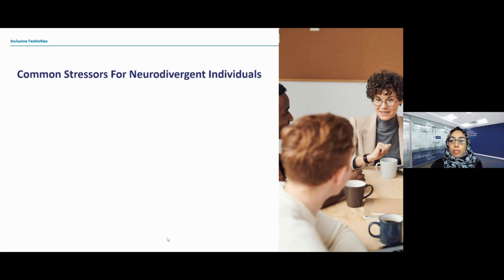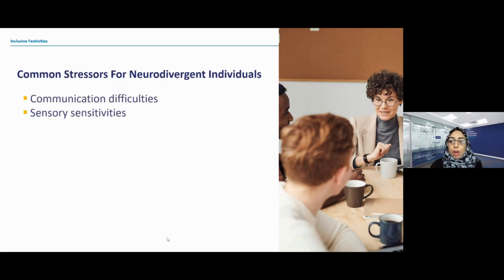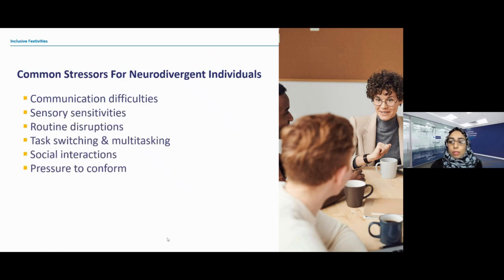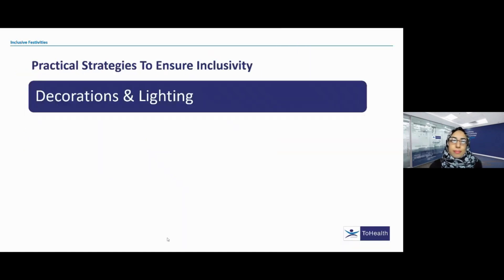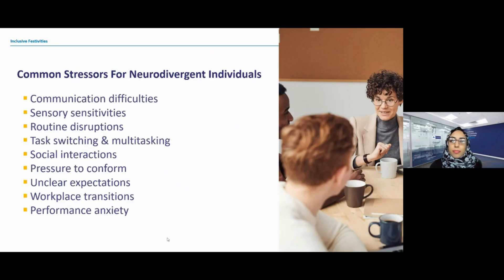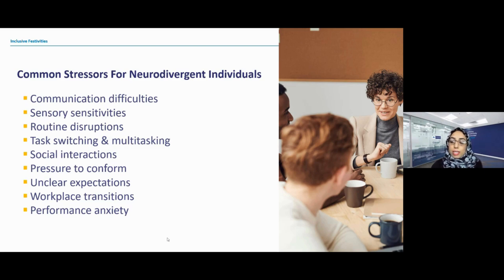Some of the common stresses and challenges that neurodivergent individuals face include communication. They often face challenges in interpreting nonverbal cues, understanding subtle social cues, and expressing themselves in a neurotypical environment, and that's the kind of thing that can lead to stress. They can also experience sensory sensitivities — being overly sensitive or under-sensitive to sensory stimuli such as bright lights and loud noises.